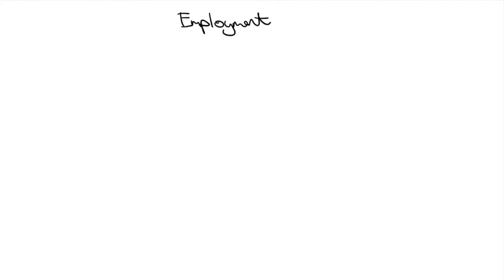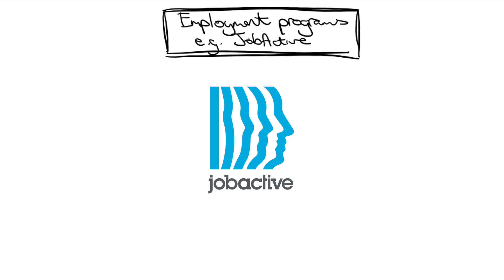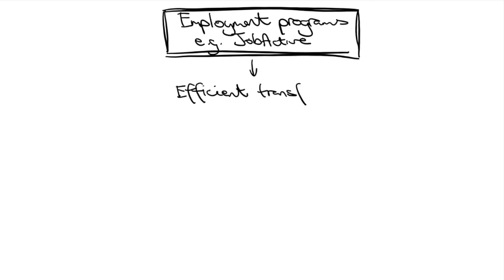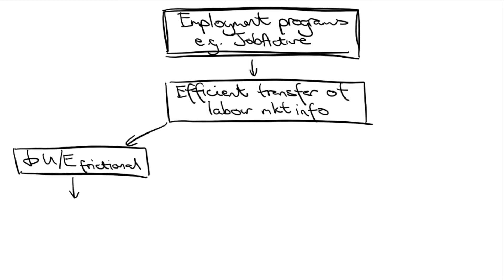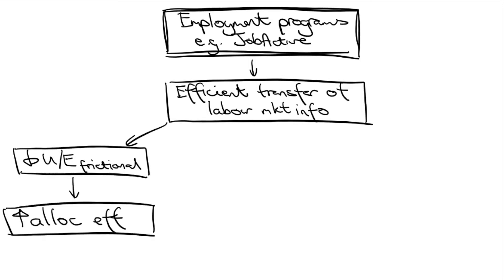Next, let's look at employment programs. The main employment program that you should study is JobActive. This is a federally funded network of employment service agencies. They aim to provide employers with recruitment assistance and help job seekers find work. Obviously, it lowers unemployment — but what type? Frictional unemployment exists due to the imperfect transfer of information between unfulfilled jobs and those seeking work. So having an efficient network could reduce frictional unemployment and increase allocative efficiency.